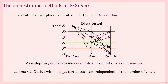Finally, we provide distributed orchestration, in which all shards receive all votes and can independently decide whether to commit the transaction. In doing so, we can eliminate one sequential phase from centralized orchestration at the cost of an increase in communication.